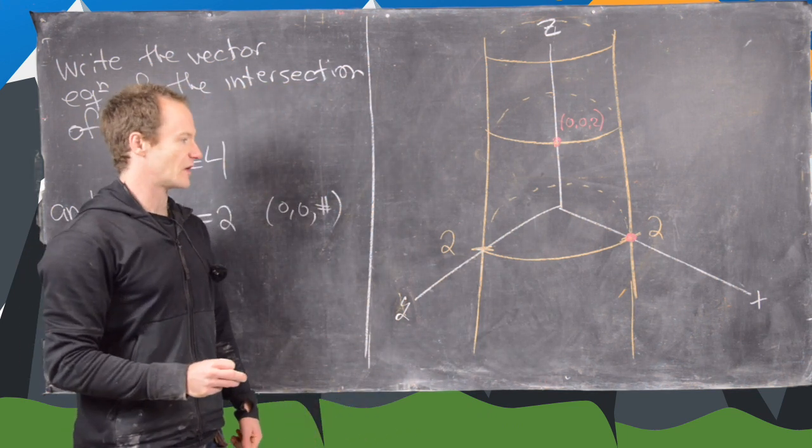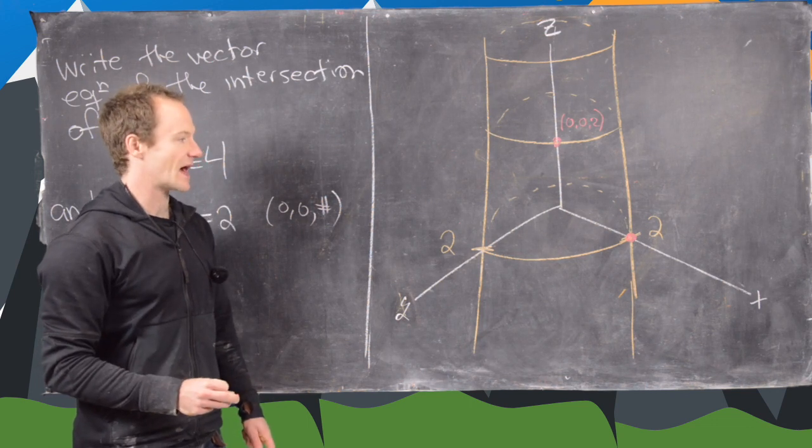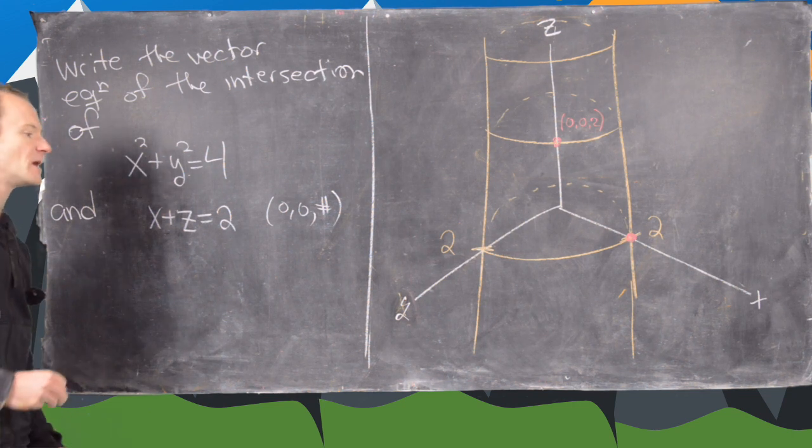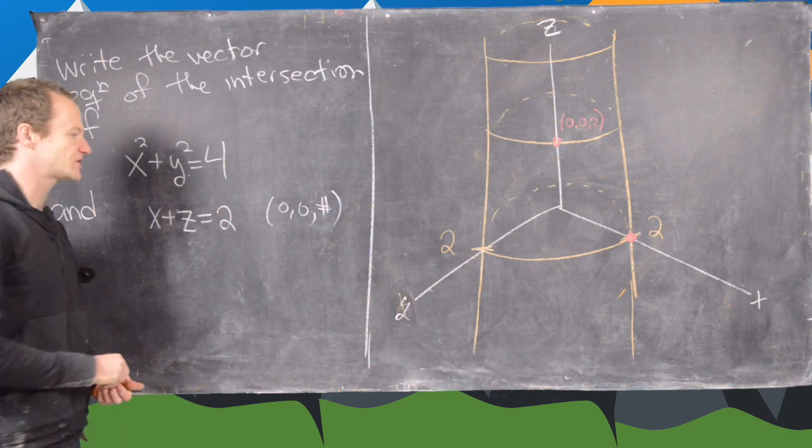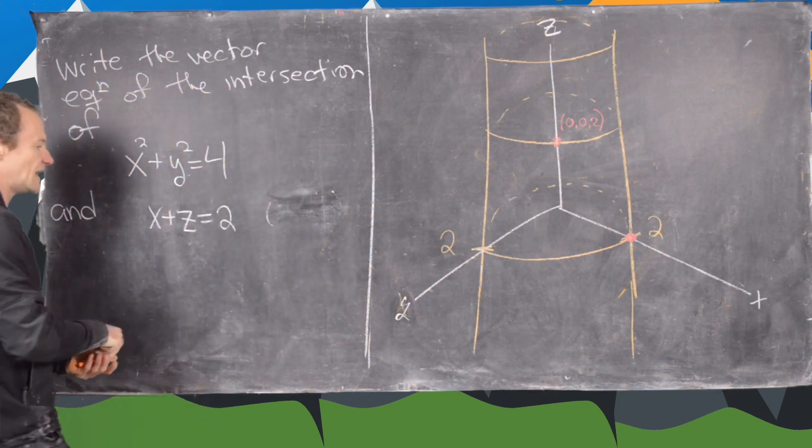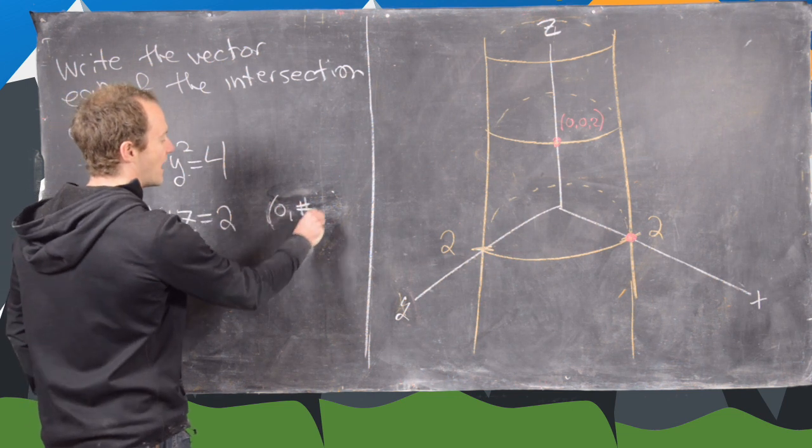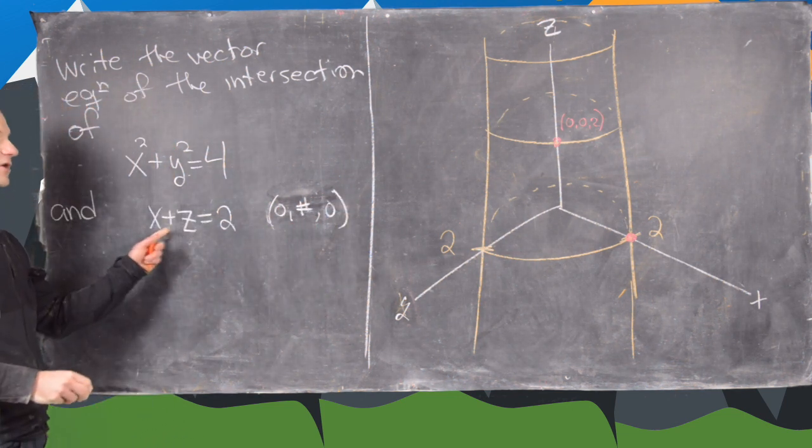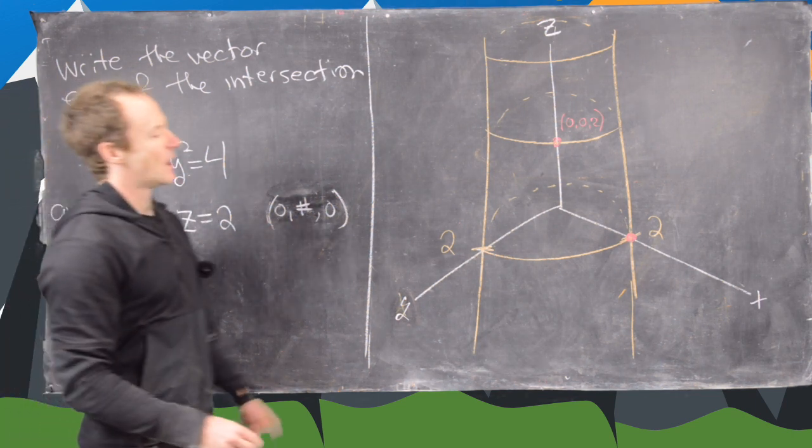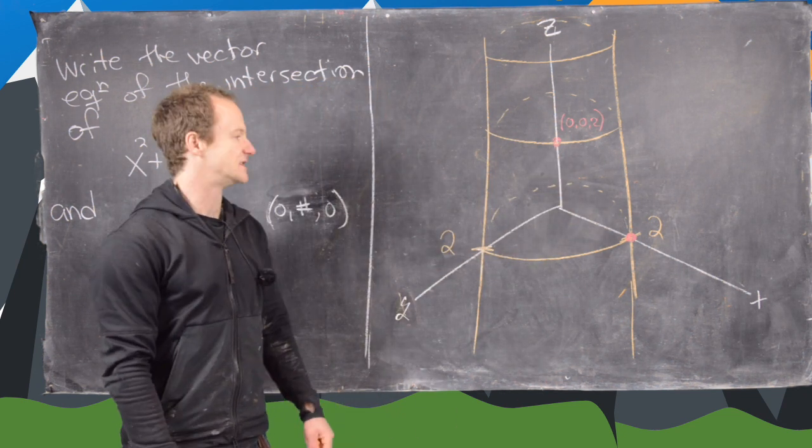And then another thing we're going to notice is that it has to be parallel to the y-axis. And we know that it's parallel to the y-axis because otherwise it would intersect the y-axis. But if it intersects the y-axis, then it would contain a point of the form 0, blank, 0. But notice, never is that x-coordinate and z-coordinate going to add to 2.